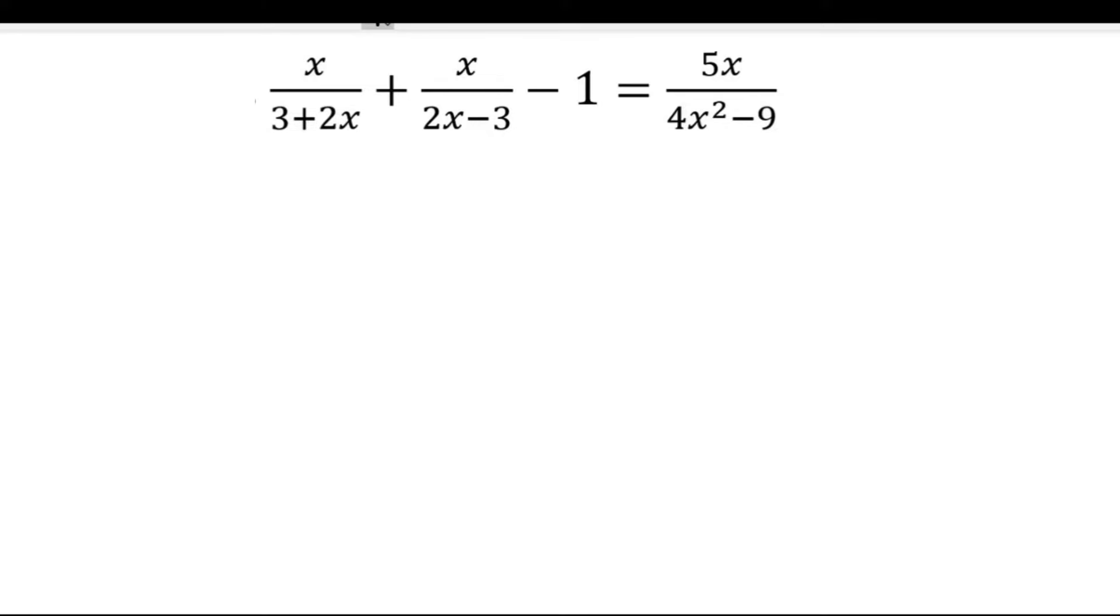What you want to do first is always look at your denominators and see which ones can be factorized. So what you should identify is that this over here is a difference of square. And so we know that that should be 2x minus 3 and 2x plus 3. That's just your difference of squares.